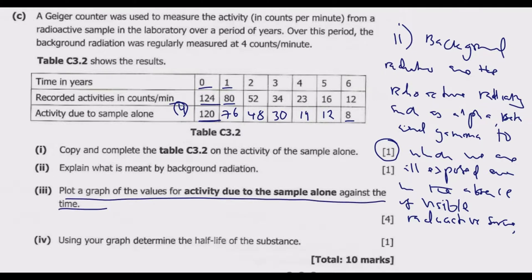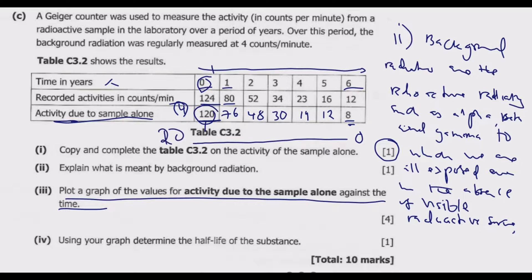On the graph paper, ensure the intervals are equally spaced — time increases by one from zero all the way to six, since six is the maximum. For activity due to sample alone, the lowest value is 8 and the maximum is 120. Start from zero and increase by increments of 20, going from zero to 120. This will make our graph well-scaled. Once you have the axes labeled correctly, let us move to the graph paper and plot these values.